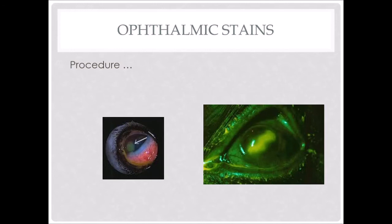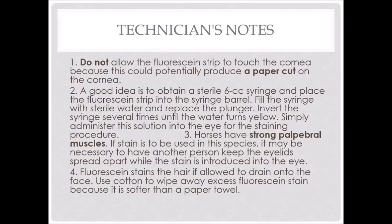Here's how I do it: a 6 cc or 3 cc syringe, put it in there. Be careful with horses — they do have strong palpebral muscles, so it's difficult to get it in there. You may have to have another person hold the eyelids open. It will stain the hair if you allow it to drain on the face, so use cotton to wipe away excess fluorescein stain. I also want to watch it drop and end up in the nasal cavity because that tells us we have a normal nasolacrimal duct.